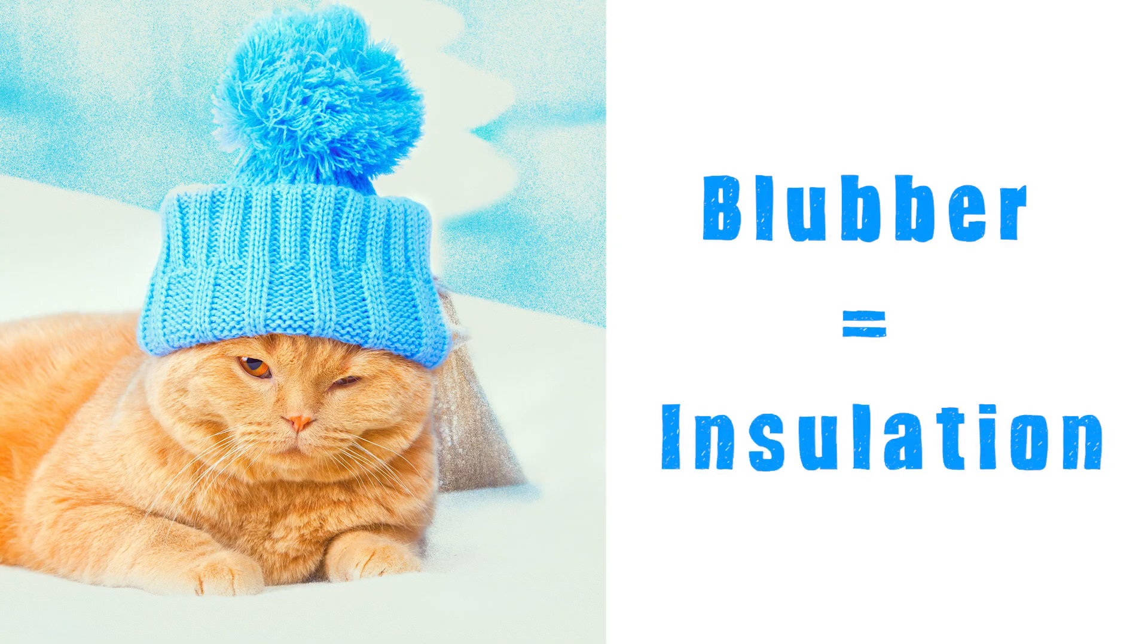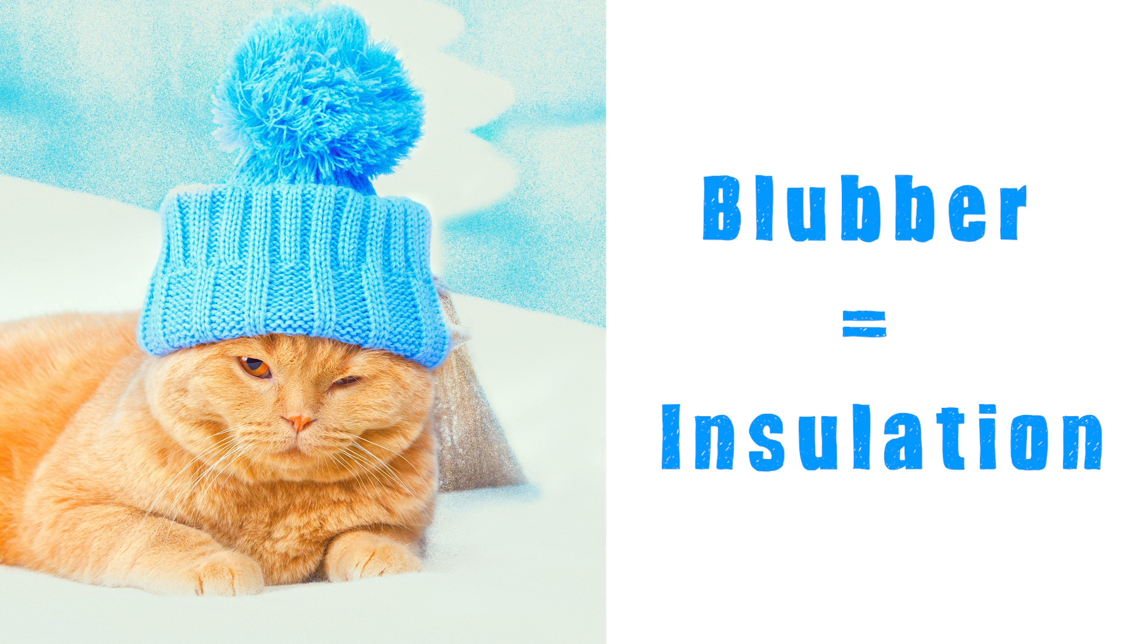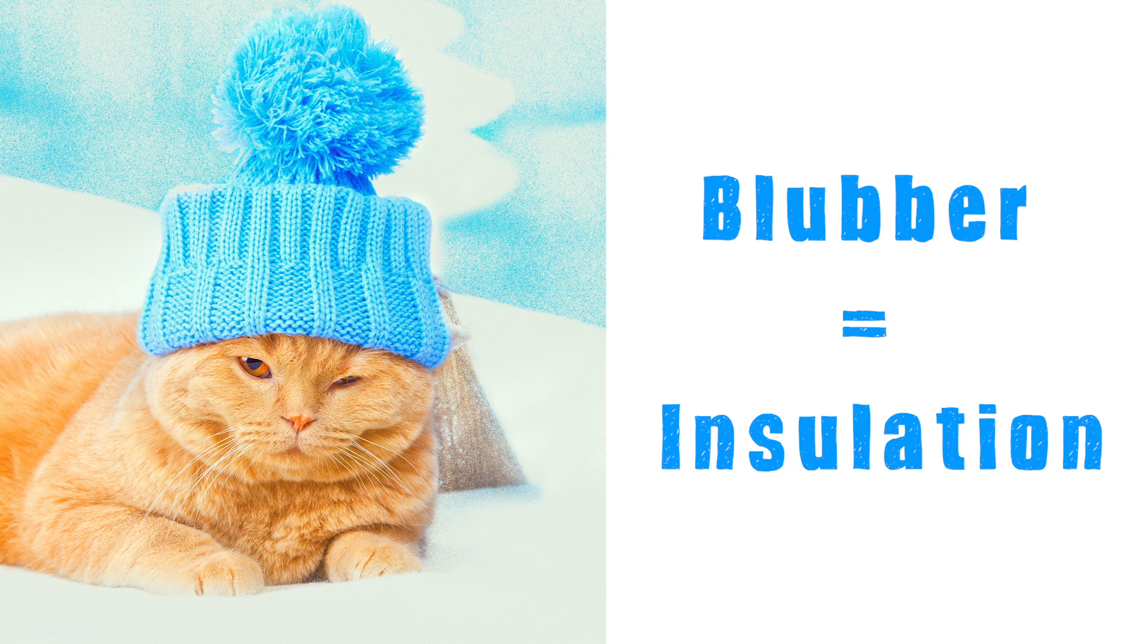Blubber helps keep animals warm because it acts as an insulator. An insulator slows down the transfer of heat, keeping the animal's body heat from escaping into the water and protecting it from the cold.